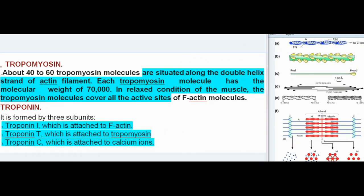Tropomyosin: About 40 to 60 tropomyosin molecules are situated along the double helix strand of actin filament. Each tropomyosin molecule has the molecular weight of 70,000. In relaxed condition of the muscle, the tropomyosin molecules cover all the active sites of F-actin molecules.